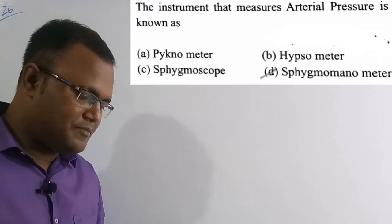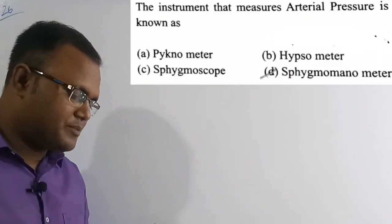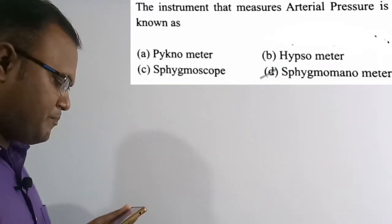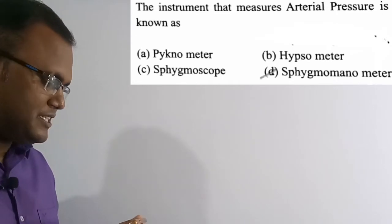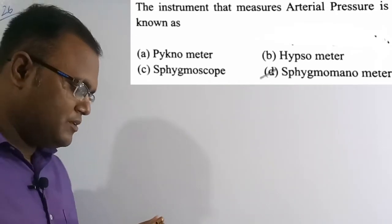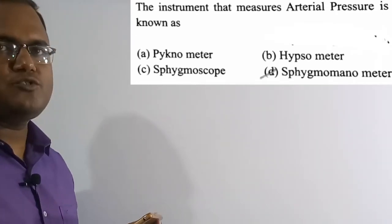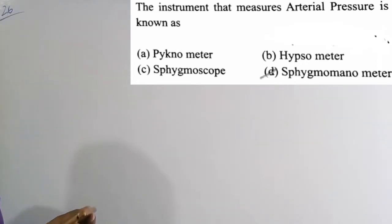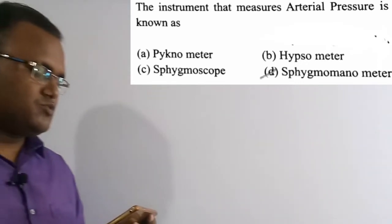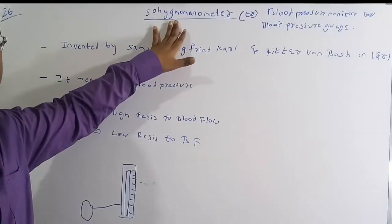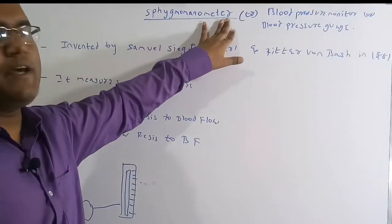Now we are going to solve the 26th question. The instrument that measures arterial pressure is known as: option A ignometer, option B hepsometer, option C sygoscope, option D sphygmomanometer. Option D, sphygmomanometer, is the correct answer. Let's discuss some important facts about this instrument.